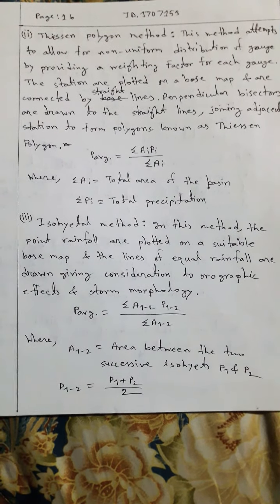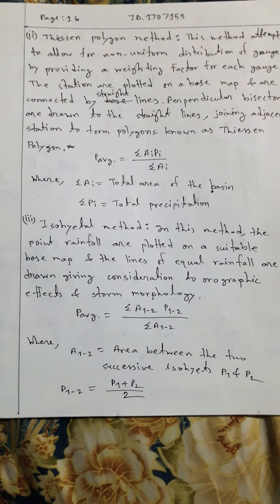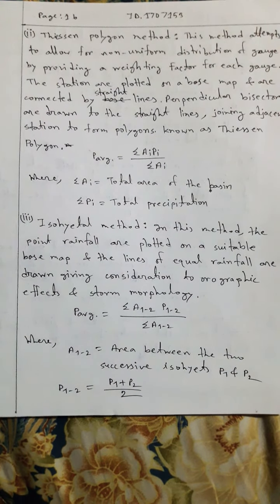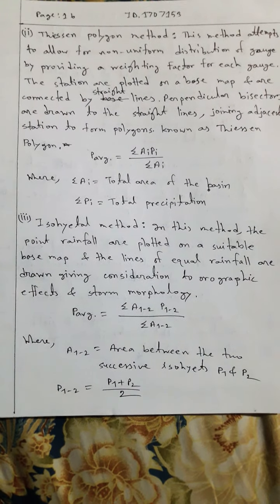Isohyetal method: In this method, the point rainfall are plotted on a suitable base map and the lines of equal rainfall are drawn, giving consideration to orographic effects and storm morphology.